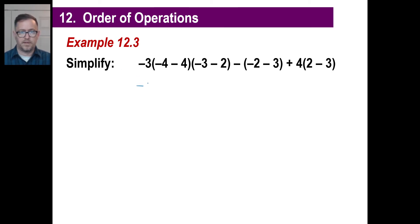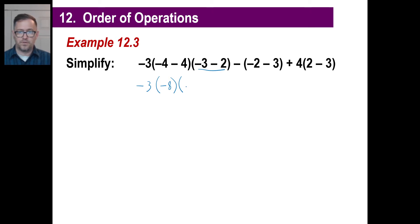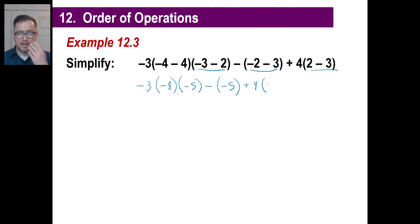We got negative 3 — leaving it. What is negative 4 minus 4? Don't say 0 — it's negative 8. Same sign: ignore it, add the absolute values to get 8, then give it the negative. Then negative 3 minus 2 gives you negative 5. Negative 2 minus 3 is negative 5. Plus 4 times (2 minus 3), which is negative 1.